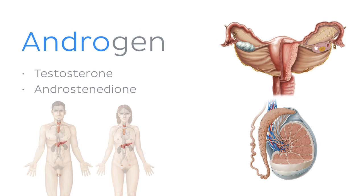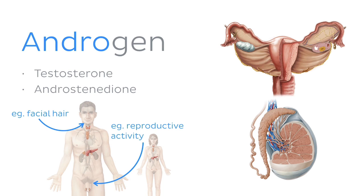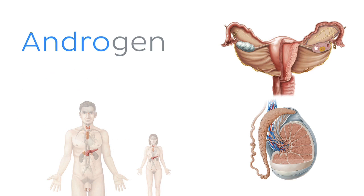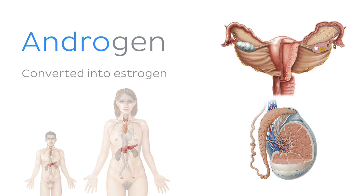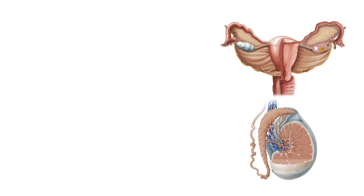Androgens are present in much higher levels in men and play an important role in male secondary sex characteristics and reproductive activity. In both sexes, one of the purposes of androgens is to be converted into hormones known as estrogens. These are found at much higher levels in females and control the menstrual cycle and development of the female's secondary sexual characteristics. Let's quickly talk about some hormone medical conditions related to the gonads.